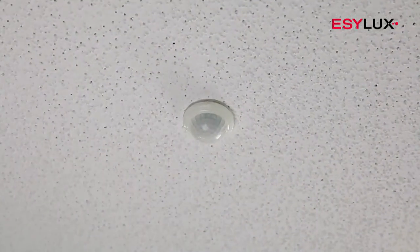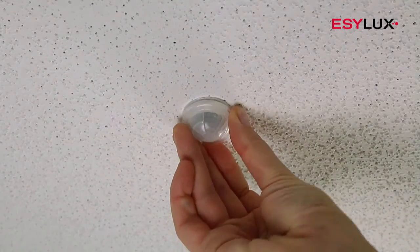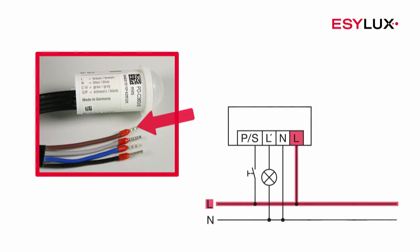The operating voltage of the detector is 230 volts AC. Connect the cables in accordance with the terminal markings and the circuit diagram.